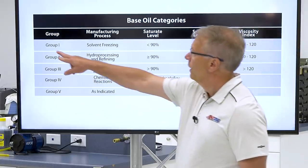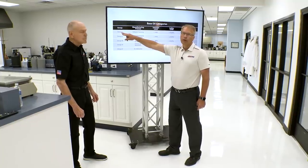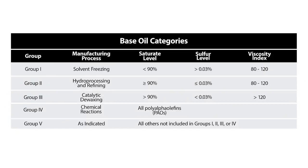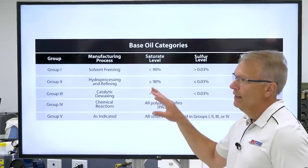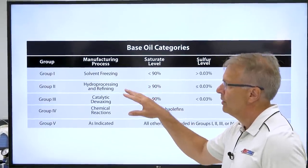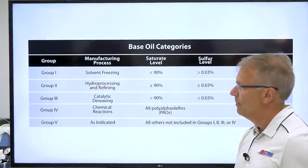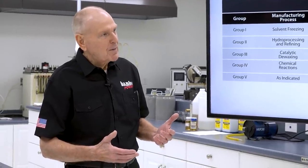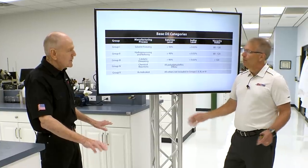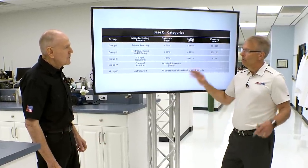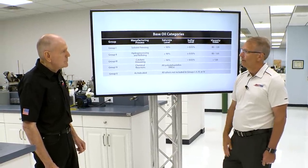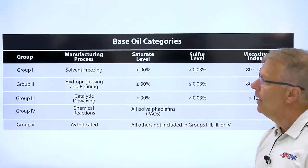We'll start with Group I fluid — a typical conventional fluid. A conventional motor oil would contain some Group I and probably Group II fluids. This is the manufacturing process it goes through: a lot of chemical refining to alter those molecules and clean them up a little bit. Not a huge amount of work, but some. The oil comes right out of the ground and has things you don't want. There are contaminants that come with it — ineffective molecules — so it's chemically refined to address that.